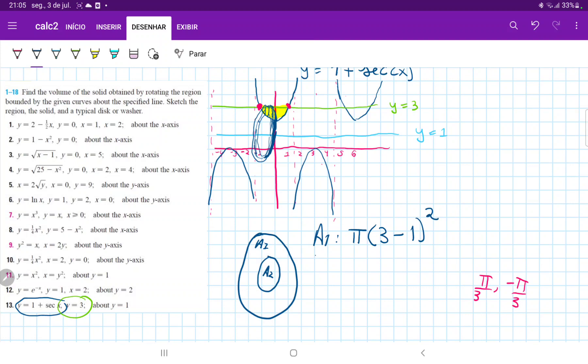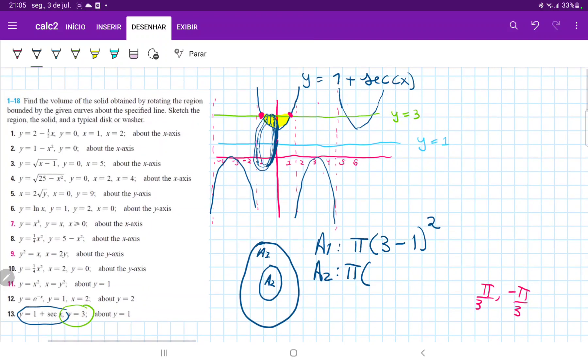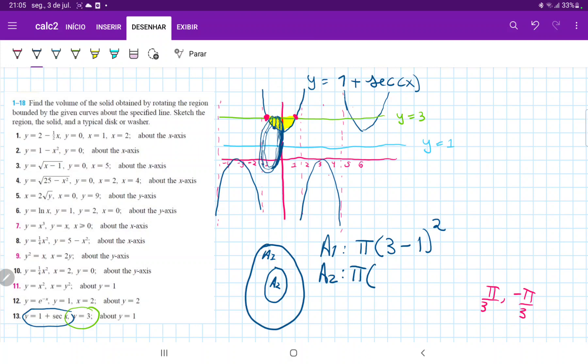And now A2 is going to be equal to pi. And now this height of A2, the height of the radius, it's always changing because it's changing in accordance to the 1 plus secant x curve. We can see that at some points, like over here, the radius is going to be smaller, whereas over here, it's going to be bigger. So it is a changing radius.